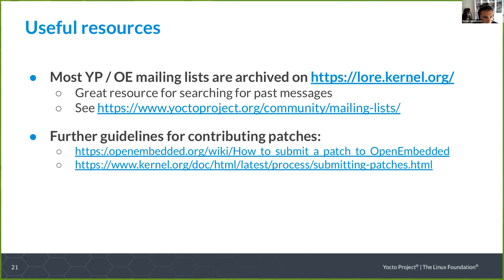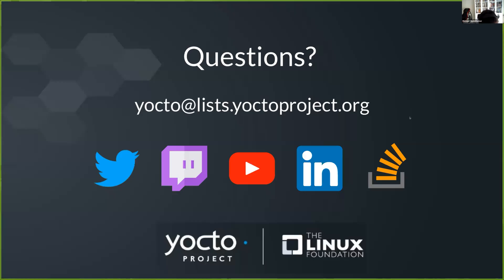For quick useful resources: all mailing lists are archived on lore.kernel.org, a great resource for searching past messages — you can even have a local inbox copy of the mailing list archives. There are also guidelines for contributing patches, like how to submit a patch to OpenEmbedded, and you can read the kernel process for submitting patches, which follows the same philosophy. We have a lot in common with the kernel community in terms of how we organize, create patches, and define criteria for submitting code.